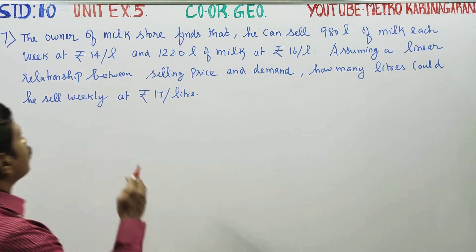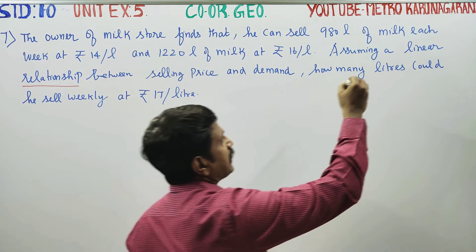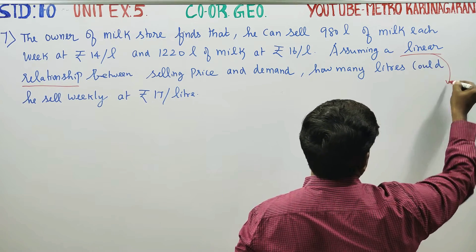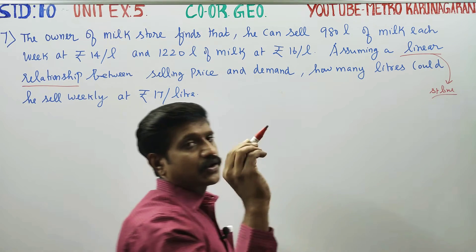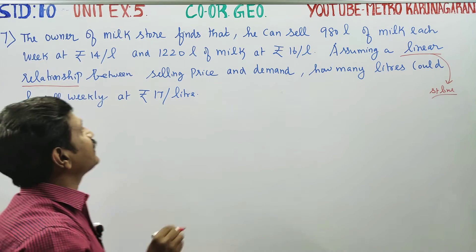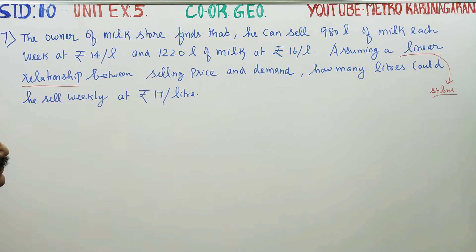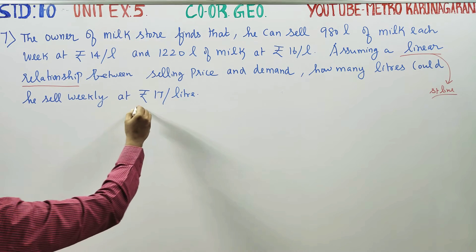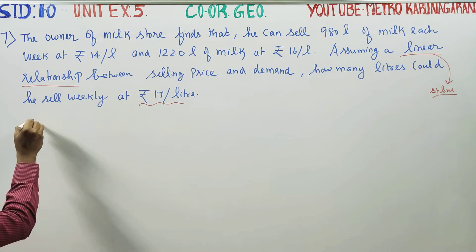Assuming a linear relationship between the selling price and the demand — the clue is linear relationship, so this is a straight line. We use the equation of a straight line to find how many litres he could sell weekly at 17 rupees per litre.